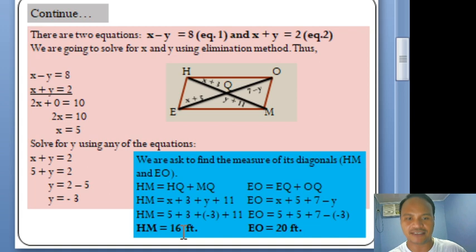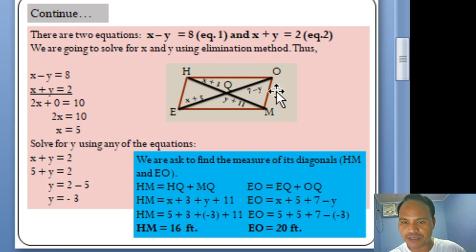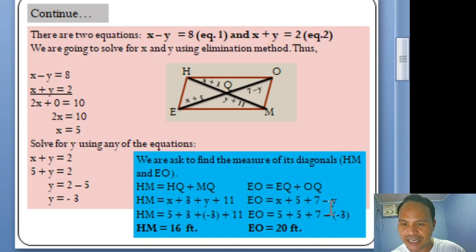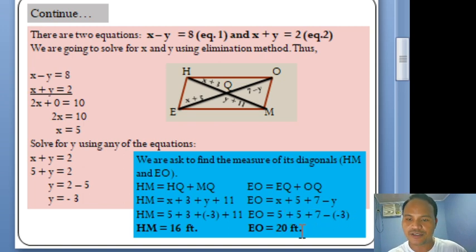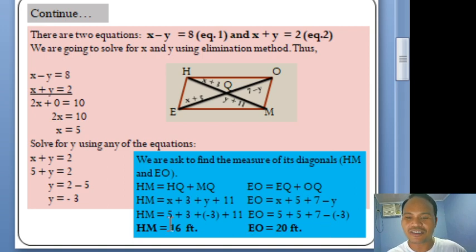For the other diagonal, EO = EQ + OQ. EQ = X + 5 and OQ = 7 − Y. Substituting X = 5 and Y = −3 gives (5 + 5) + (7 − (−3)) = 10 + 10 = 20 feet. Therefore, the measures of the diagonals are 16 feet and 20 feet.